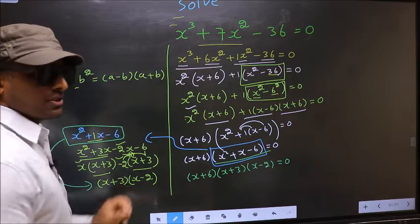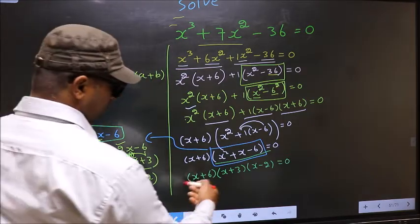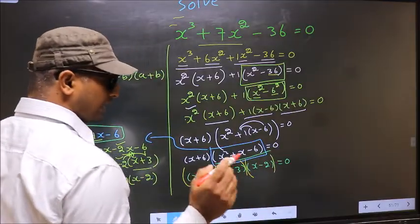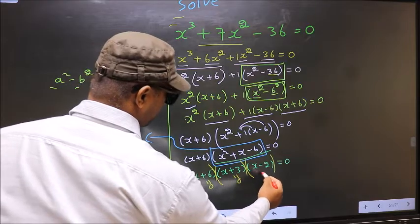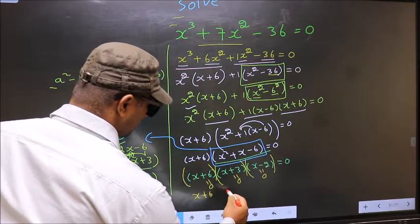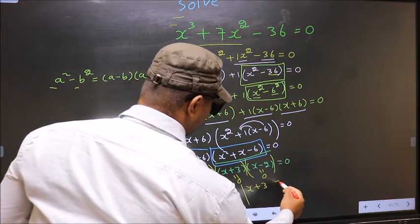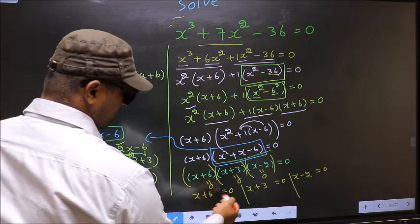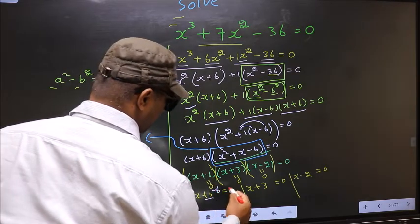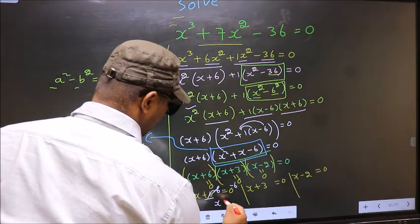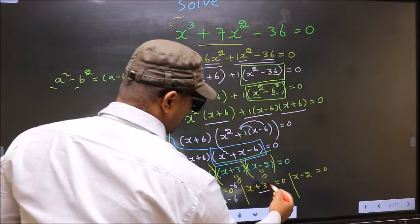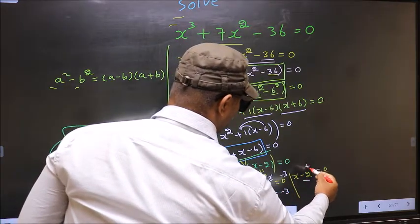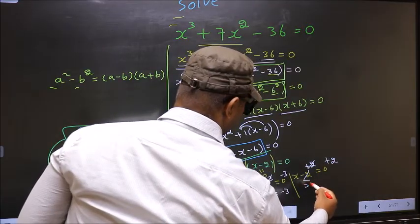They told us to solve, so we should get values of x. This equation will change to x plus 6 times x plus 3 times x minus 2 equal to 0. Over here we got product of brackets equal to 0. So to get x values, we should equate each bracket to 0. That is: x plus 6 equal to 0, giving x equal to minus 6. x plus 3 equal to 0, giving x equal to minus 3. x minus 2 equal to 0, giving x equal to 2.